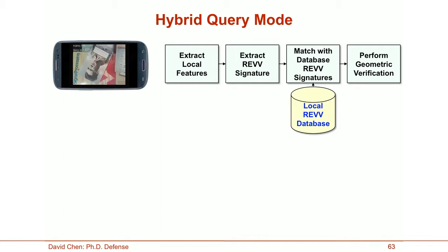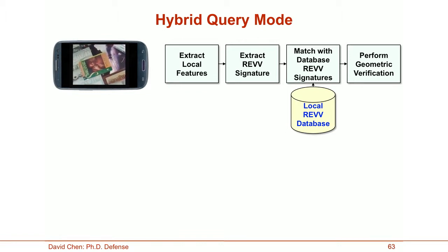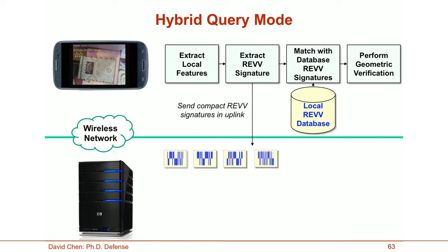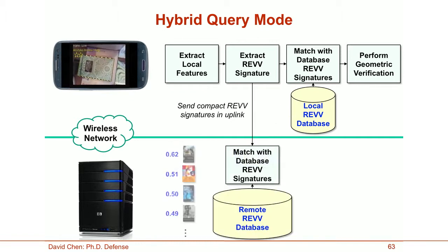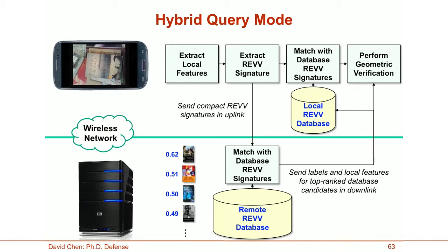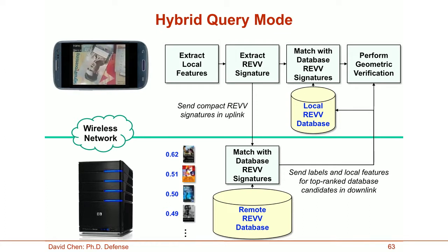We have also extended this system to have a hybrid query mode. Most of the time, the local database search is sufficient and we terminate the query locally. Occasionally, we want to expand the query onto a remote server when network conditions are favorable. At this time, we can send the same compact REV signatures over the network to match against a REV database stored on the server, generating a ranked list of database candidates. We send back to the phone the labels and local features for the top-ranked candidates, which can improve the accuracy of the current query and update the local REV database so that future queries are more accurate. This hybrid query mode is well suited to typical wireless networks where downlink speed is much higher than uplink speed.